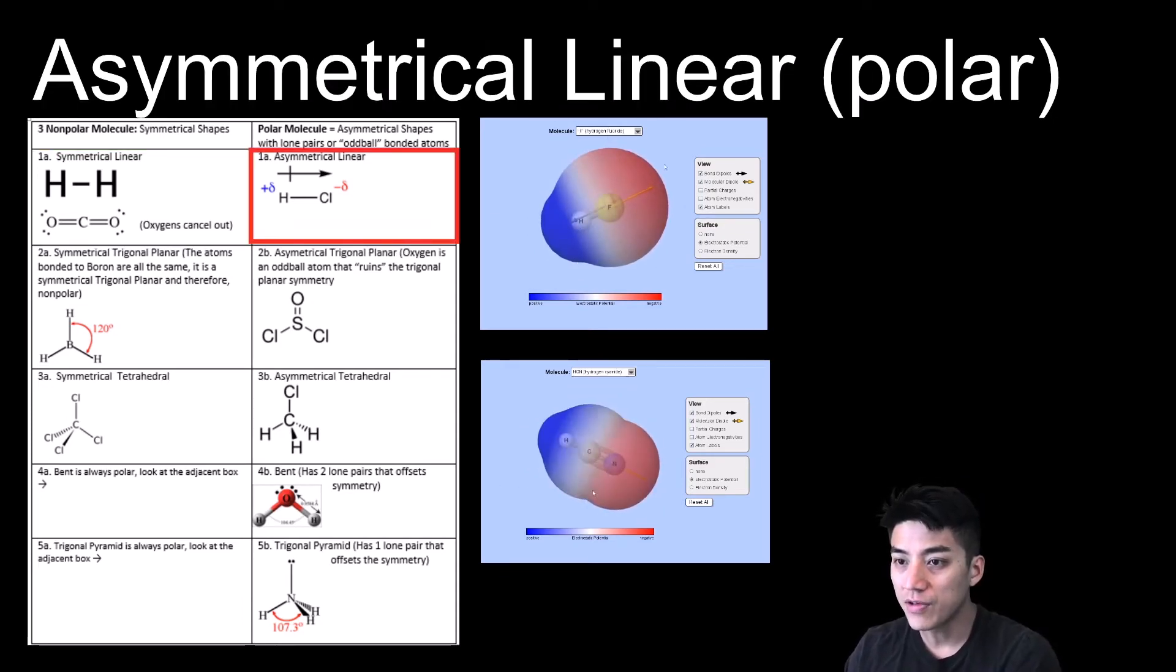So in this example, I have HF, hydrogen fluoride, and HCN, which is hydrogen cyanide. And these are just two examples of things that are asymmetrical and linear, which makes them polar. So this one's obviously clear because you could see a contrast in the two electrostatic regions. There is one end that is blue and the other end, which is red.